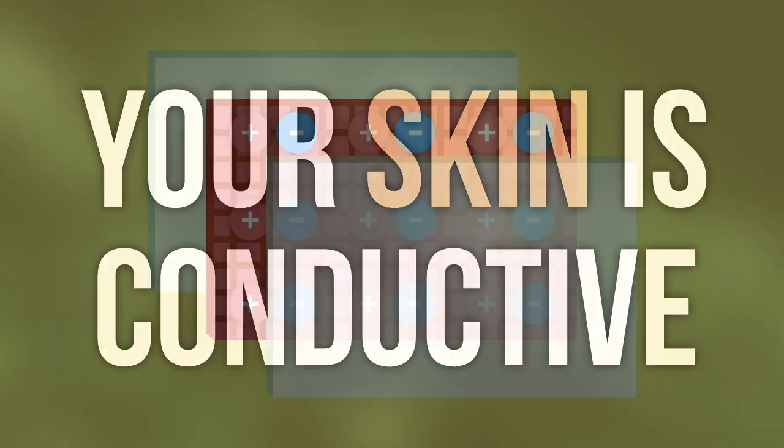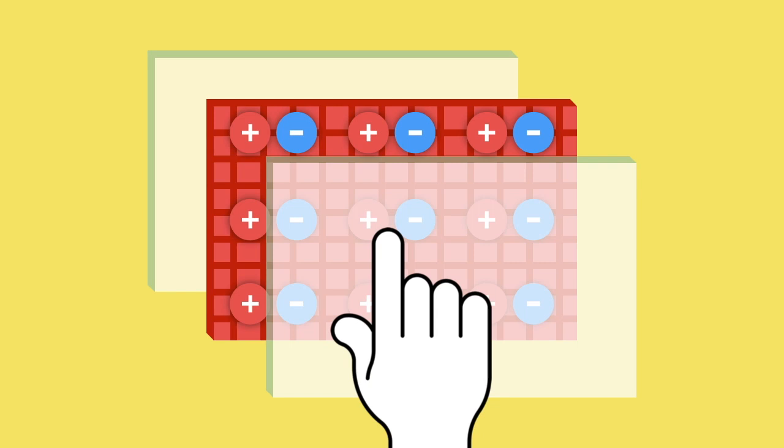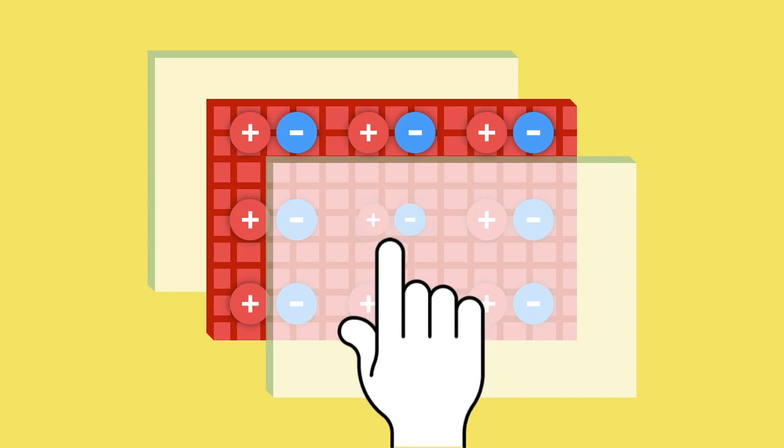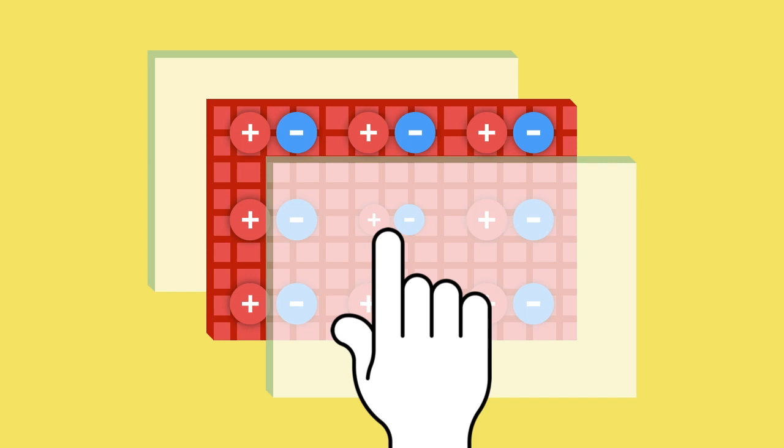It has to do with the simple fact that your skin is conductive. You see, when a conductive material touches the screen, some of the sensor glass's electric charge is transferred to it, decreasing the charge of the sensor glass.